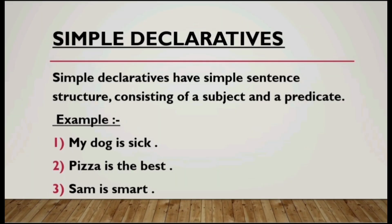Simple declaratives. Simple declaratives have a simple sentence structure — it consists of a subject and a predicate. So simple declaratives have simple sentence structure and they consist of subject and predicate, just simply subject and predicate, without any modifier, adverbial, etc.